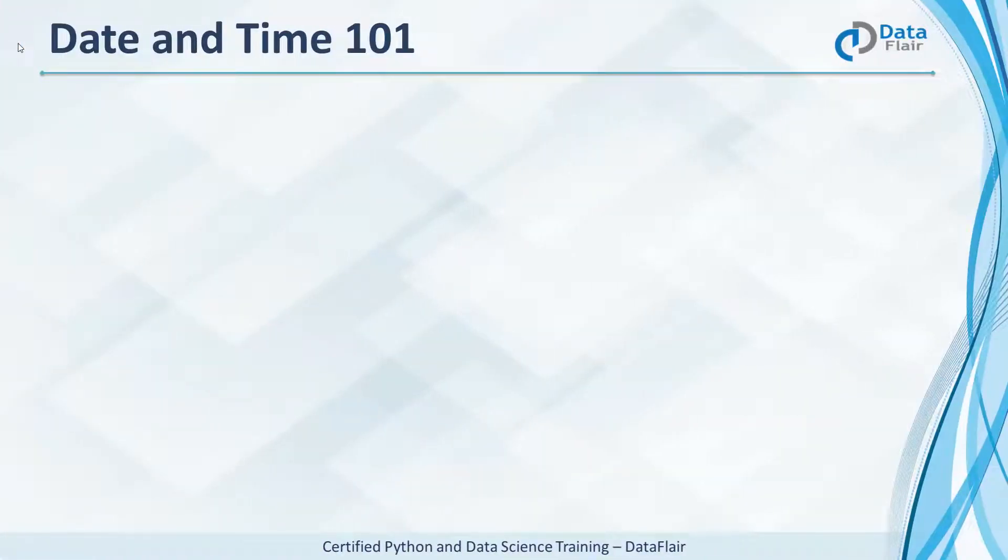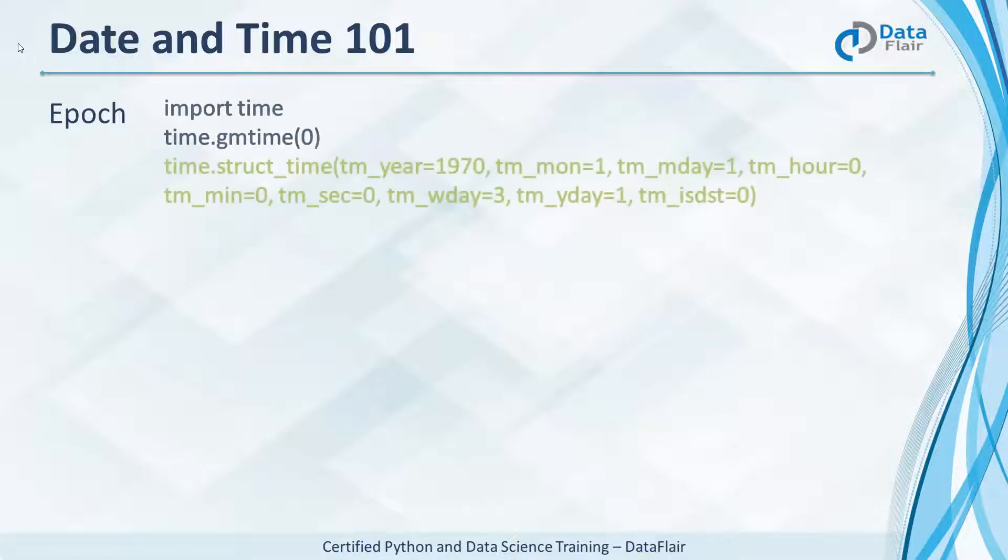Talking about date and time, there are some terms you should know. The epoch is the point in time from which time is measured. This is the epoch, the beginning of an era. Ticks are floating point numbers in seconds. Ticks denote a time interval and are calculated from the epoch.